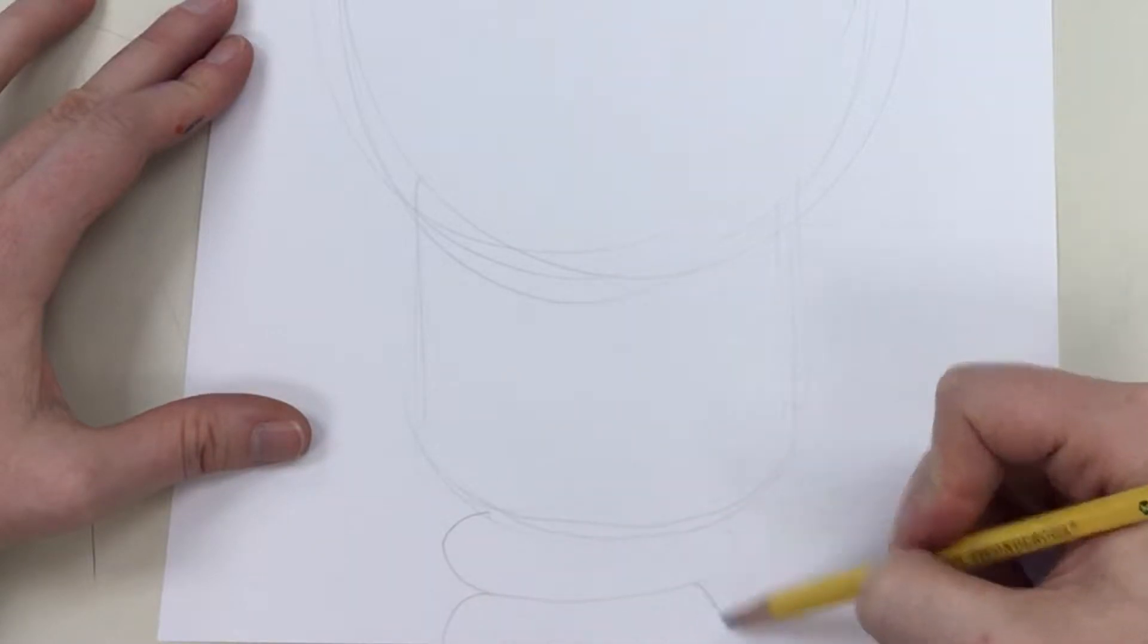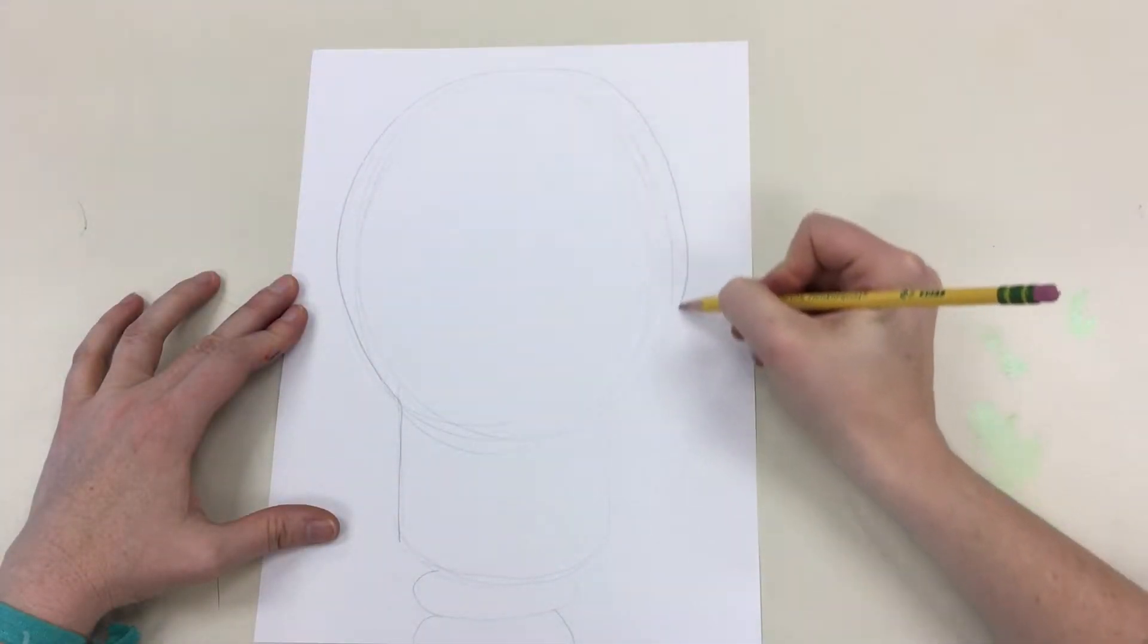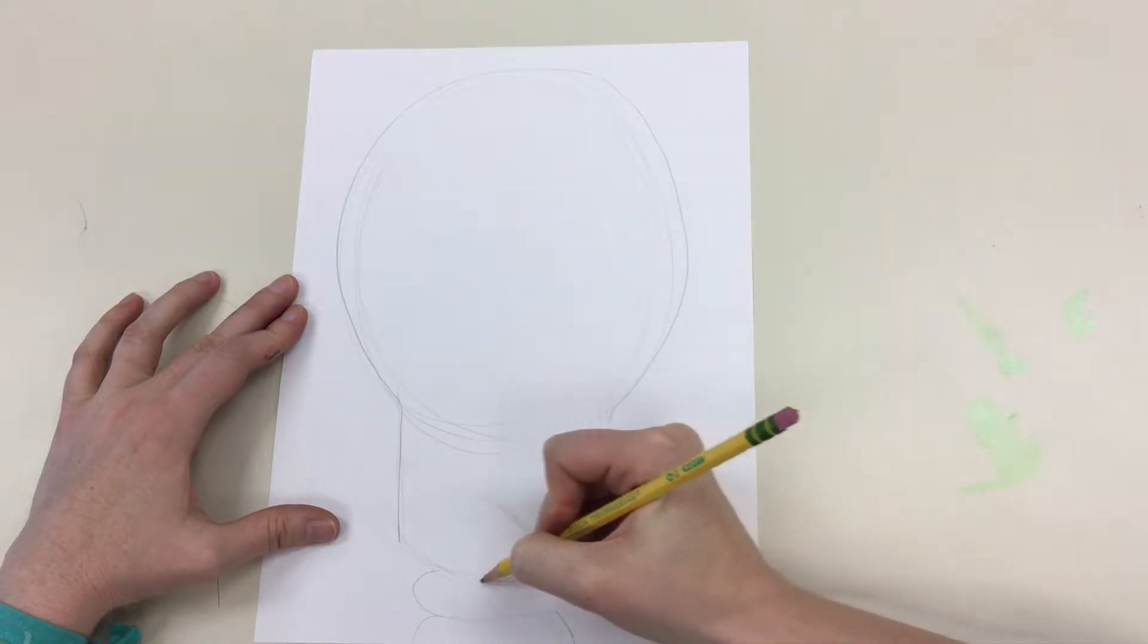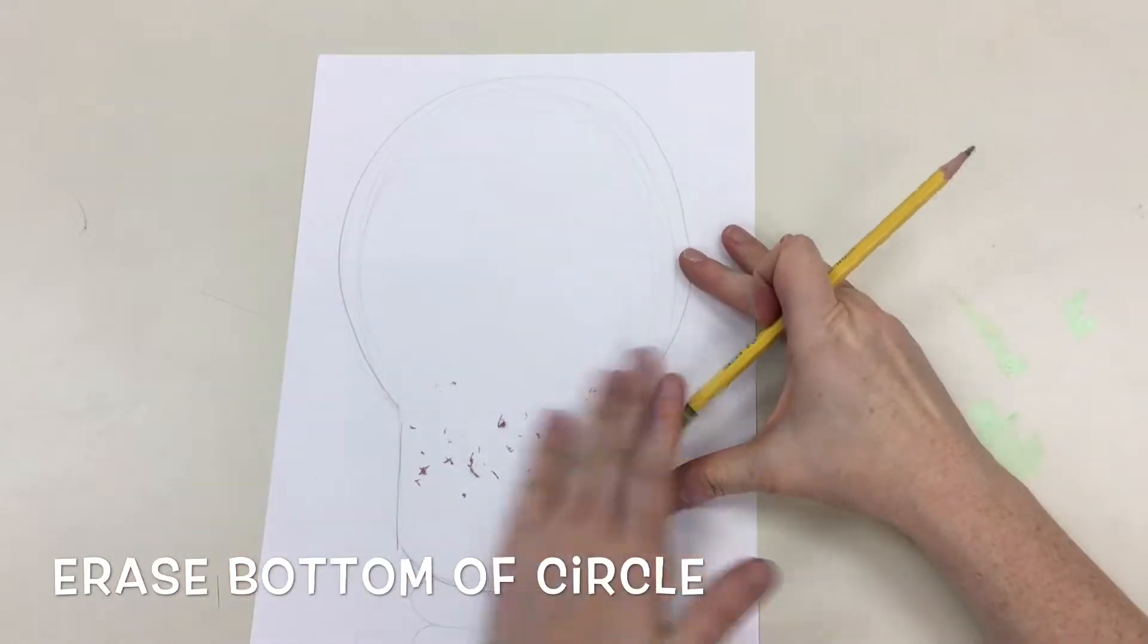I had space underneath so I made the neck by making ovals. Next, you're going to trace around the outside of your skull so you have the skull shape that you want and erase the bottom part of the circle.